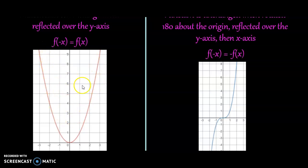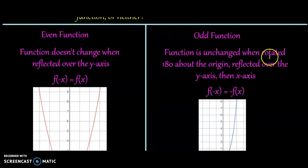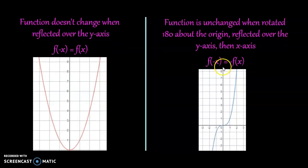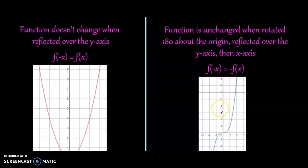And then we have odd function. This one remains unchanged if we rotated 180 degrees about the origin. Another way of looking at it is that if I am focused on the first quadrant, if I reflect it over the y-axis and then over the x, I'm going to end up getting the bottom. It is rotated about the origin 180 degrees. That is an odd function.